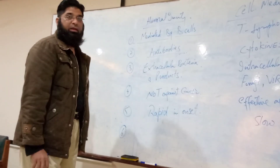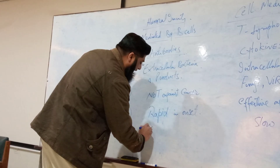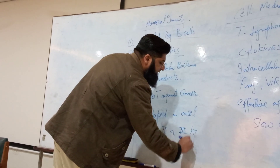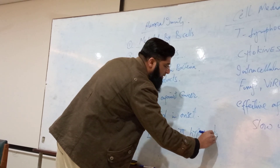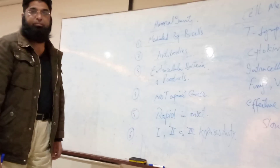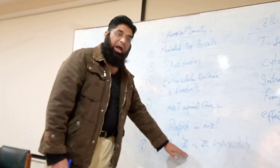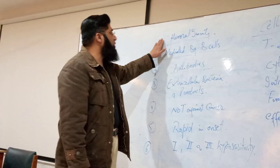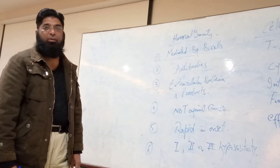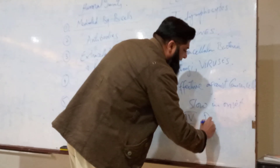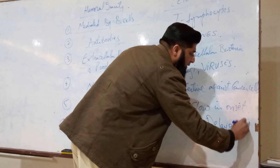Number six difference: type one, type two, and type three hypersensitivity reactions are mediated through humoral immunity. On the other hand, type four, or delayed hypersensitivity, is mediated through cell-mediated immunity.